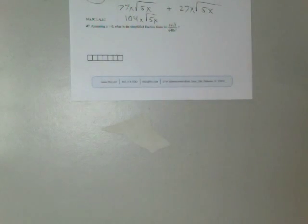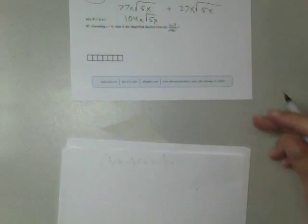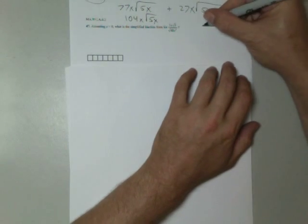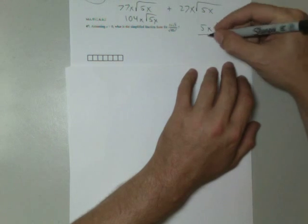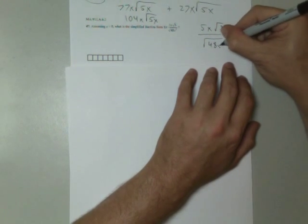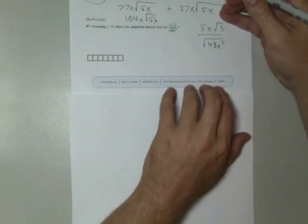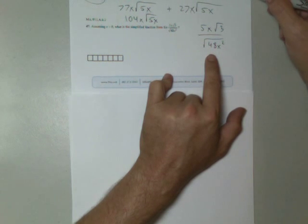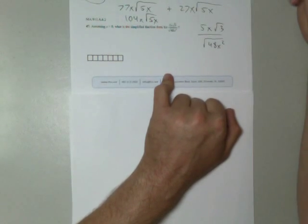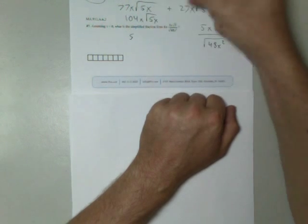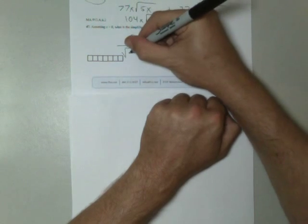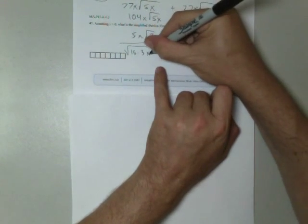Assuming x is greater than 0, because I can't take the square root of a negative number. What is the simplified radical form: (45x√3)/√(48x²)? Okay, the top looks pretty simplified. Let's see. 6 times 8, 12 times 4, 16 times 3.